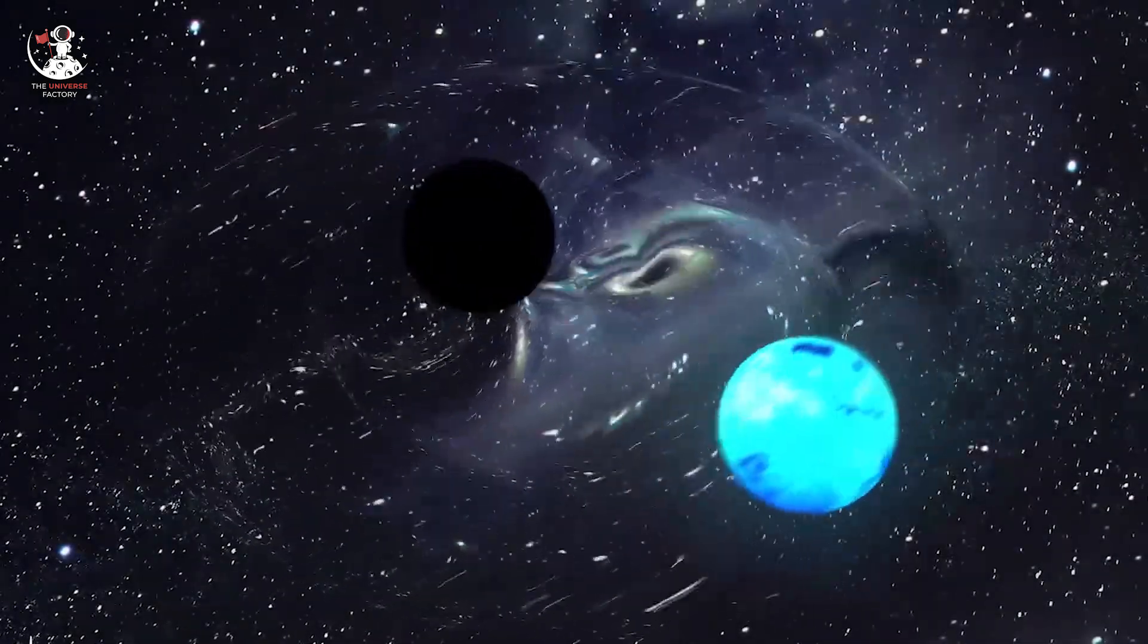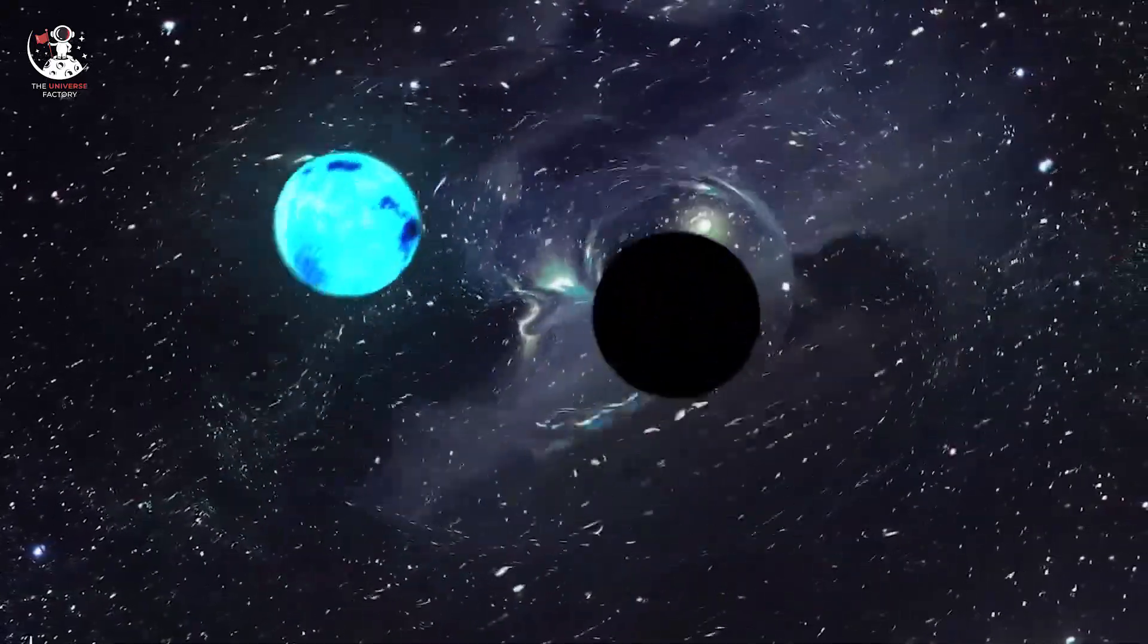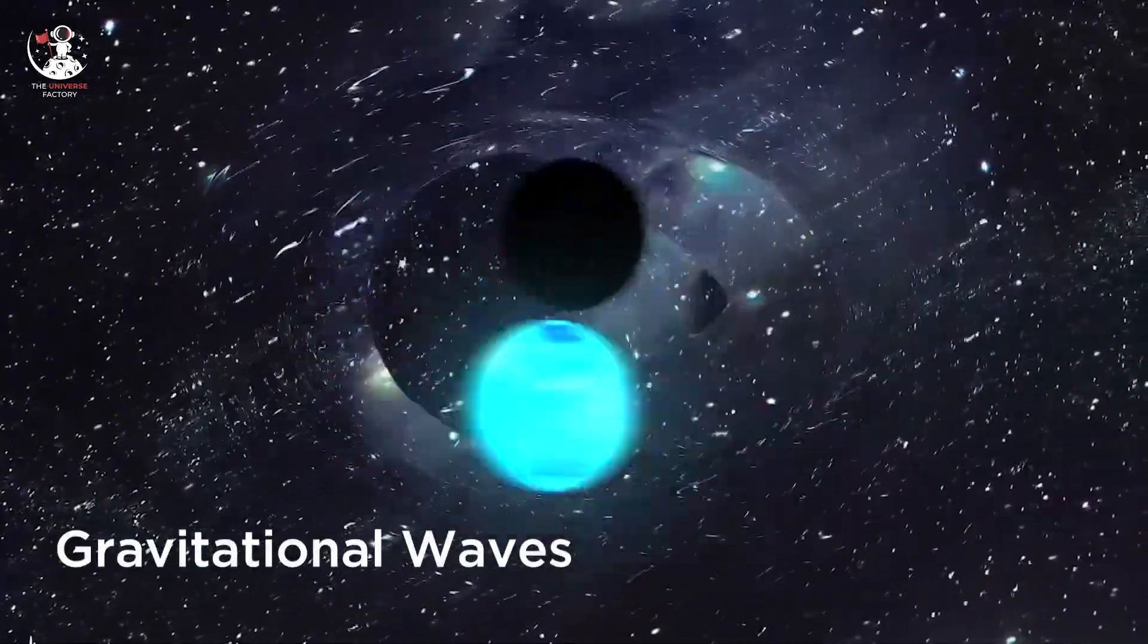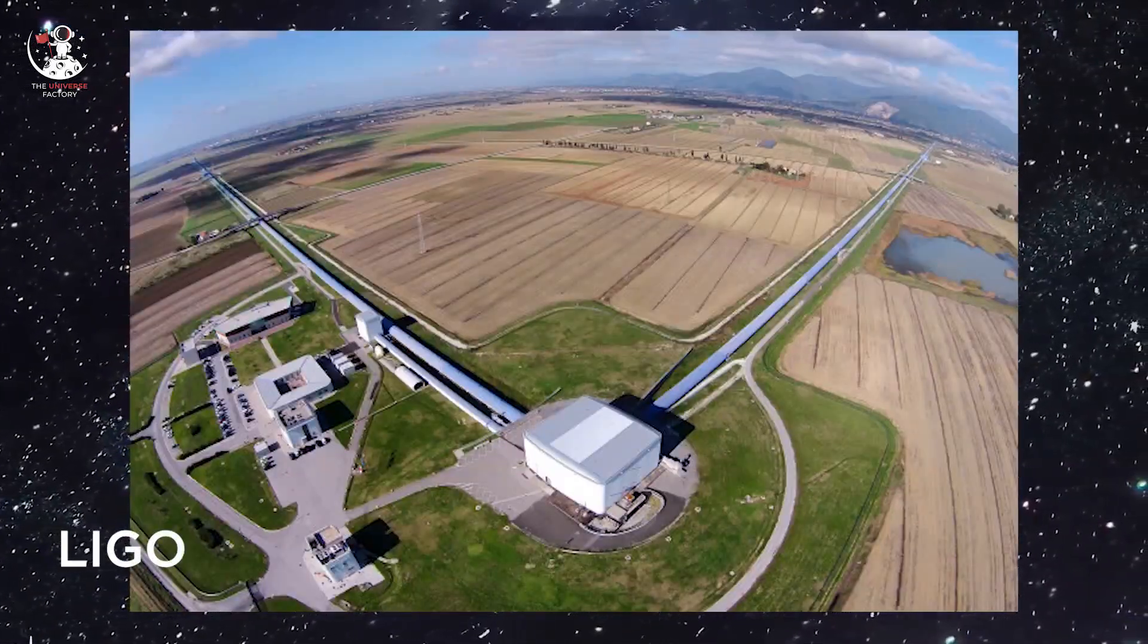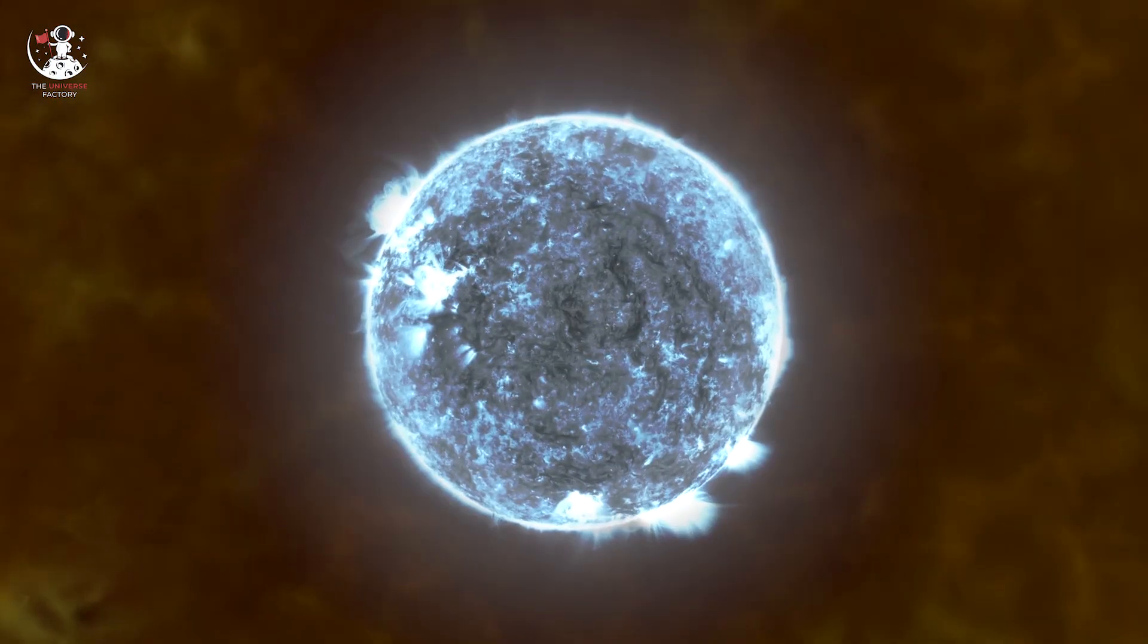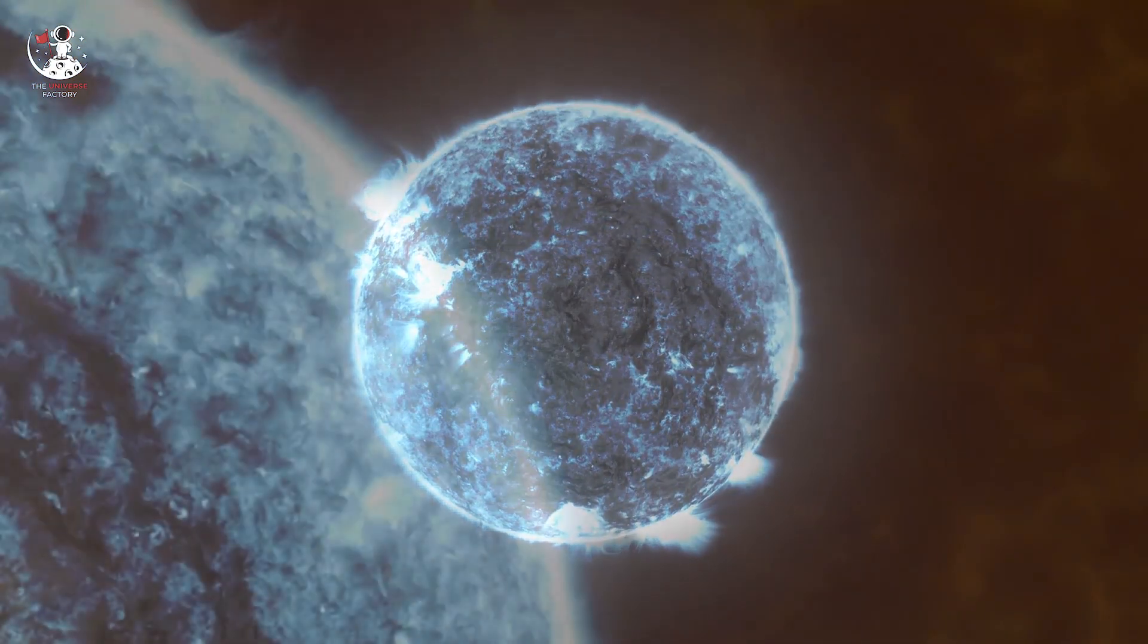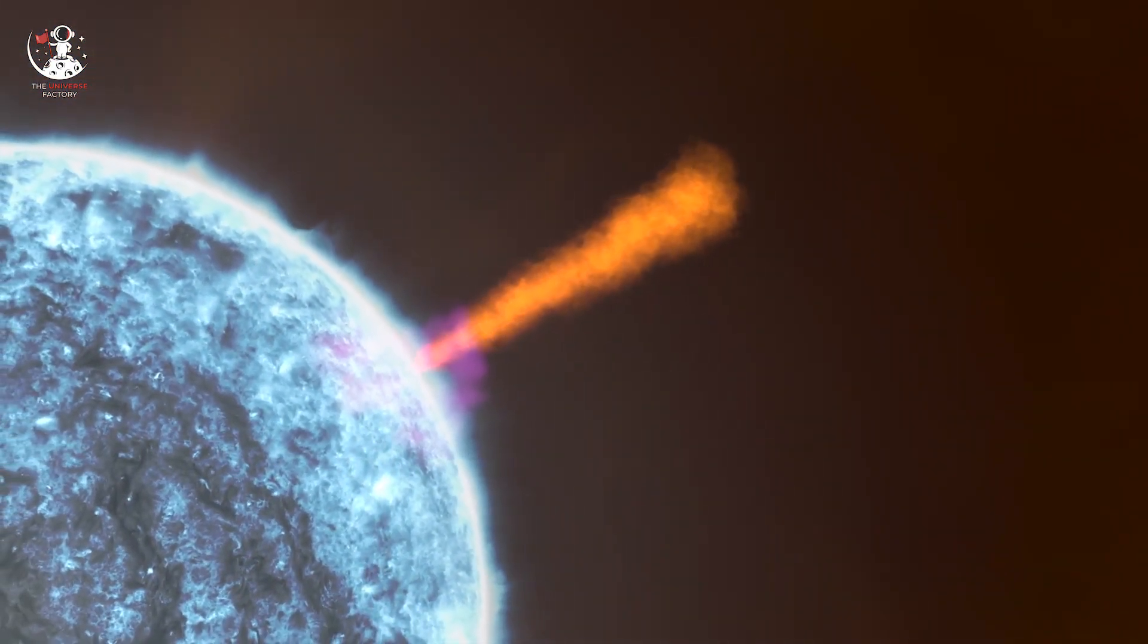This kilonova could have been detected by other means as well. The collision that led to such events can create ripples on the fabric of spacetime. These ripples are known as gravitational waves and can be detected here on Earth by detectors like the Laser Interferometer Gravitational-Wave Observatory, or simply LIGO. But LIGO wasn't active when GRB 230307A flared up in space. The facility was in the middle of a three-year shutdown at that time, receiving upgrades to make it more sensitive, only coming back online in May 2023.